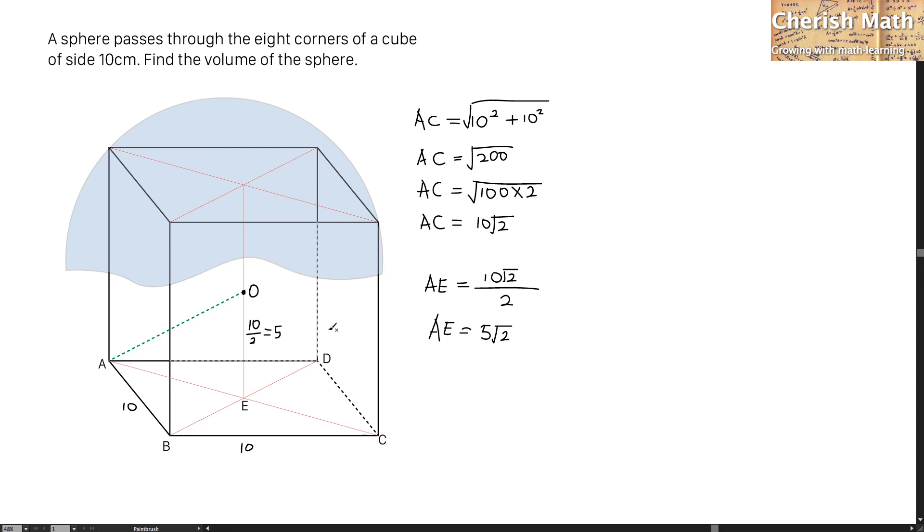And I'm going to work out the length of OA, which is square root of 5 squared, plus the length of AE, squaring it up.